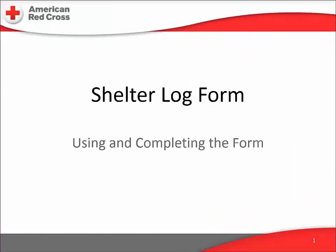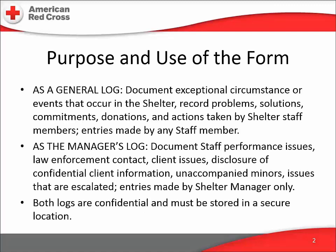This video is part of a series intended to give an overview of the forms used by the American Red Cross in our shelter operations. The shelter log form is used to record anything and everything that happens at the shelter. There are two main uses for this log form: as a shelter log, which records the usual and unusual happenings in the daily life of a shelter — such as staff changes, deliveries, donations, success stories, lessons learned. In short, it's the diary of the operation.